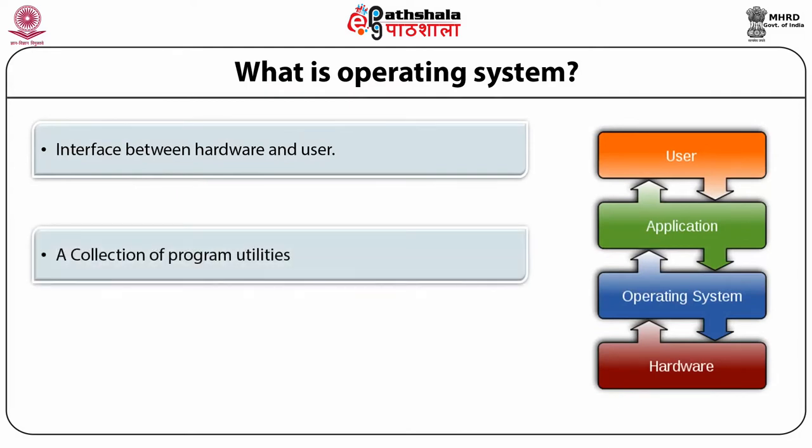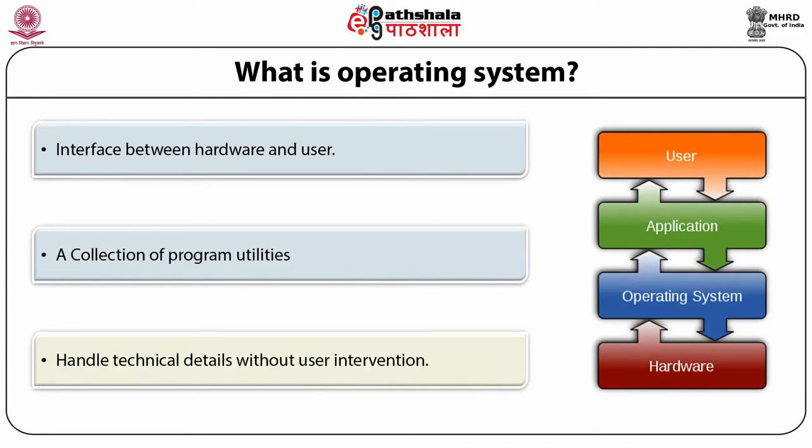It is a collection of program utilities that handle the technical details without user intervention. We can view an operating system as a resource allocator. Computer systems have many resources — hardware and software — that may be required to solve a problem: CPU time, memory space, file storage space, IO devices and so on. The OS acts as the manager of these resources, facing numerous and possibly conflicting requests. The operating system decides how to allocate them to specific programs and users so that it can operate the computer system efficiently and fairly.